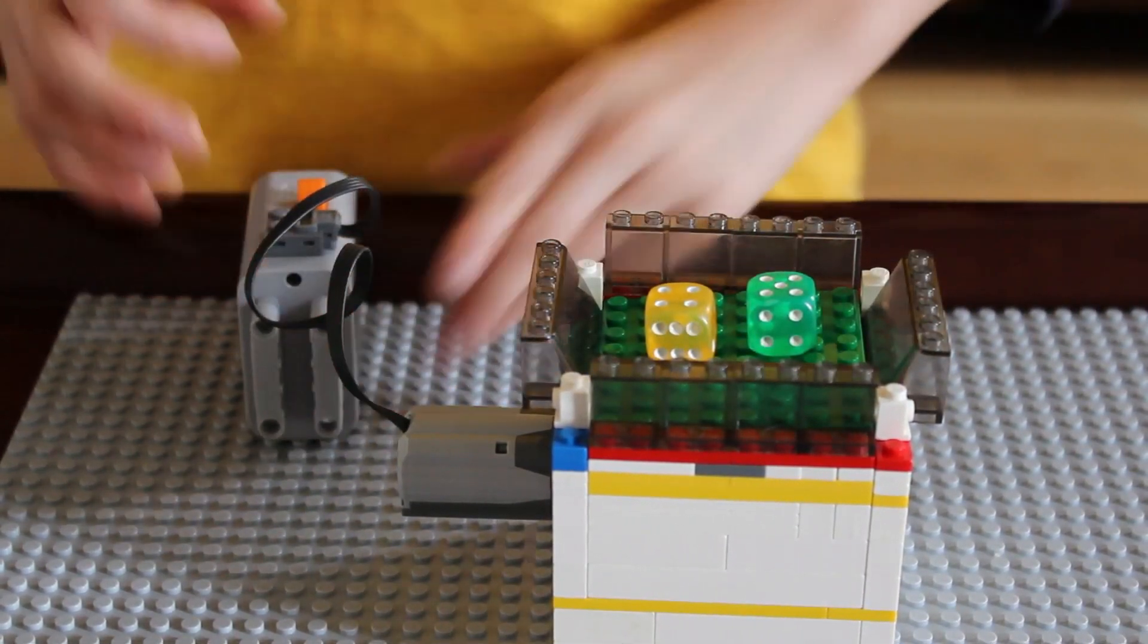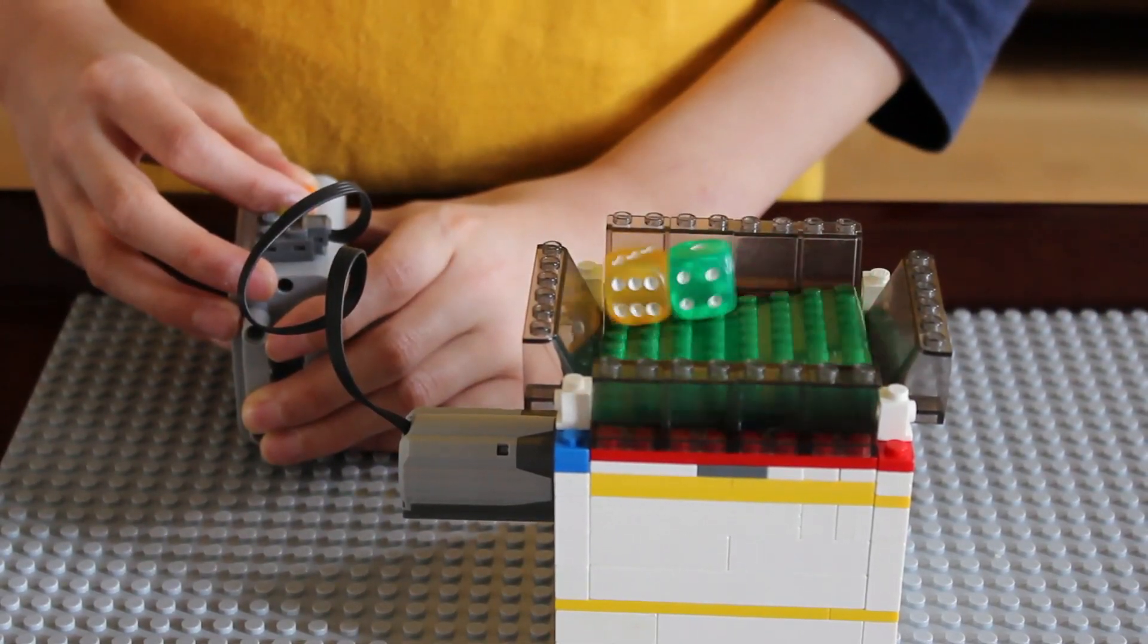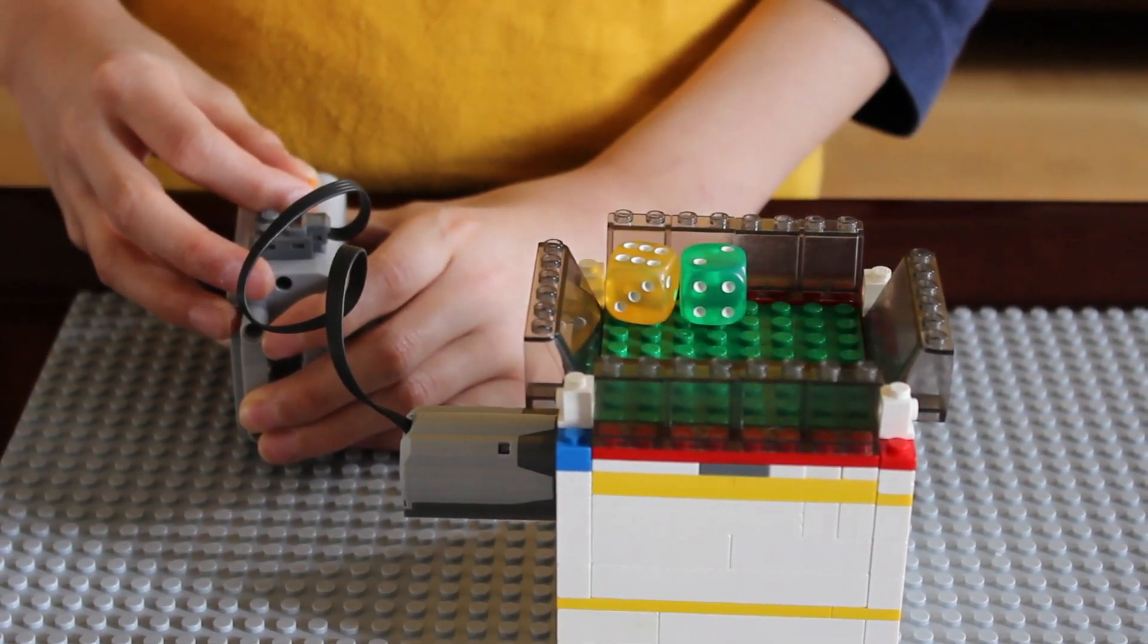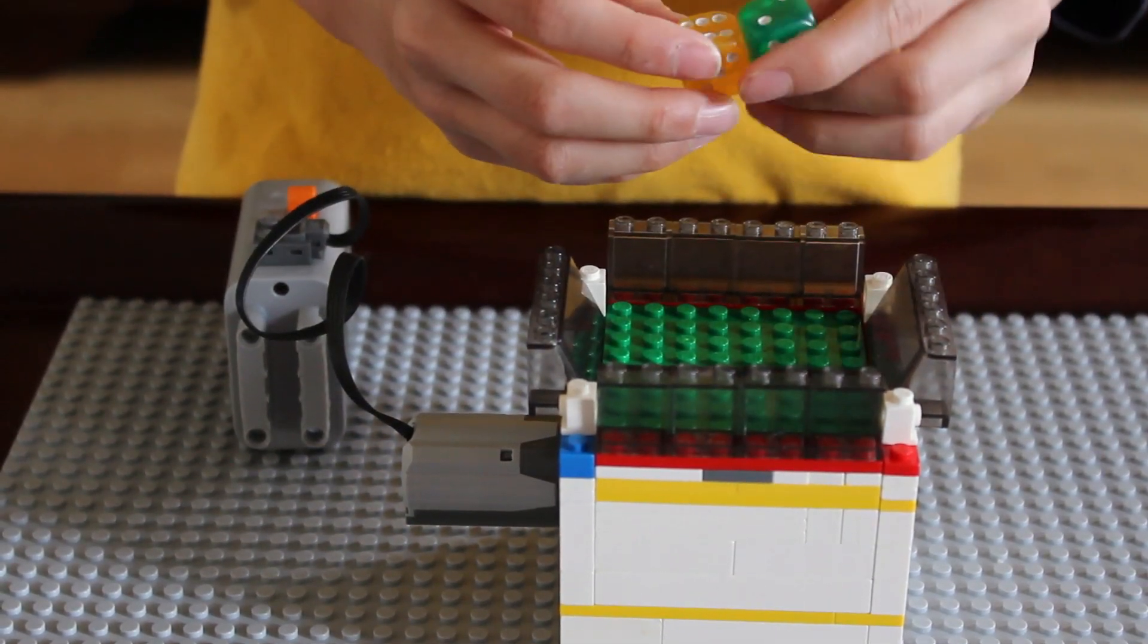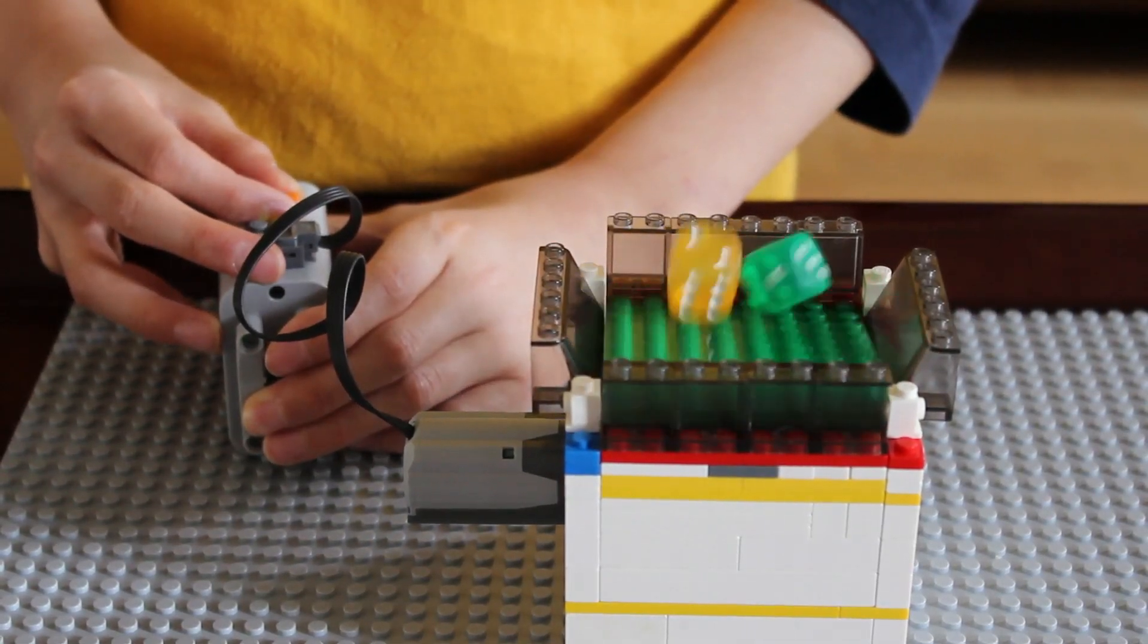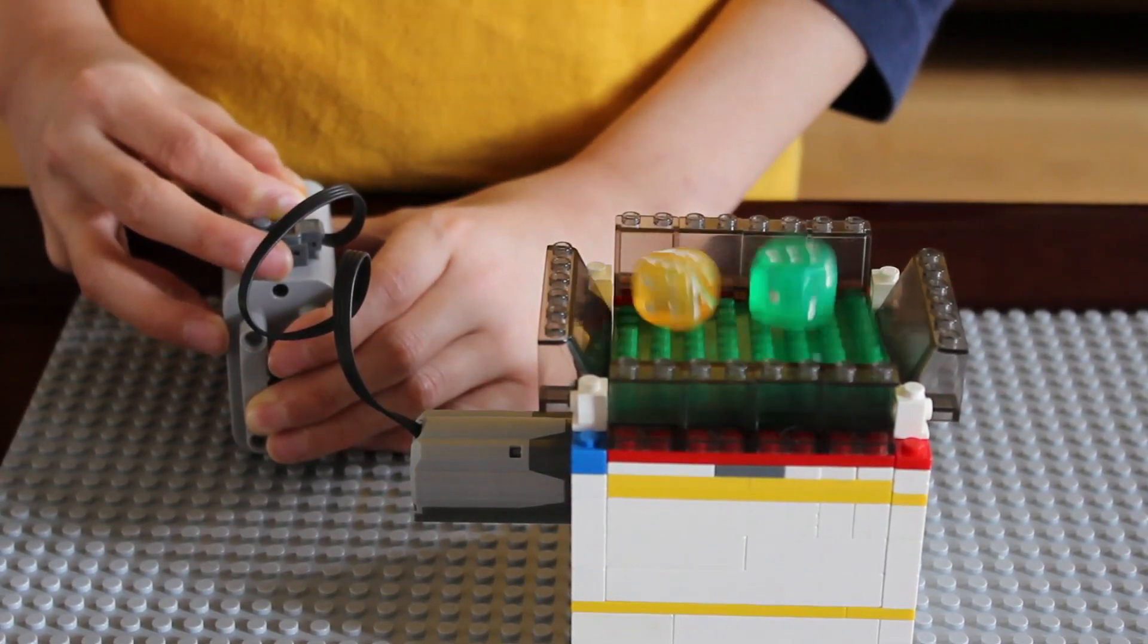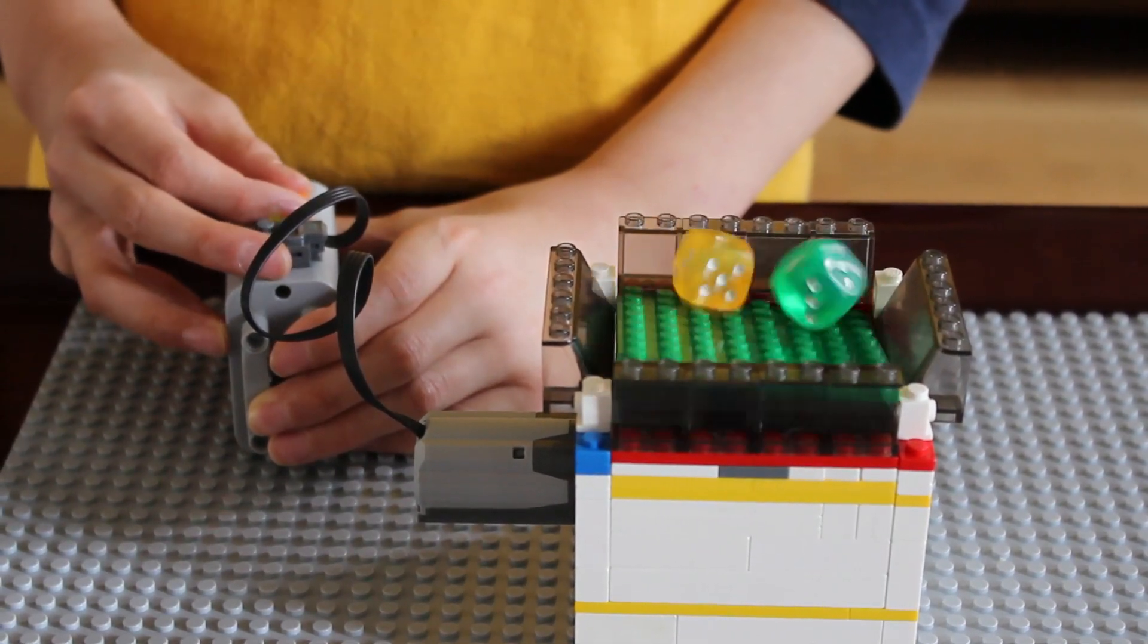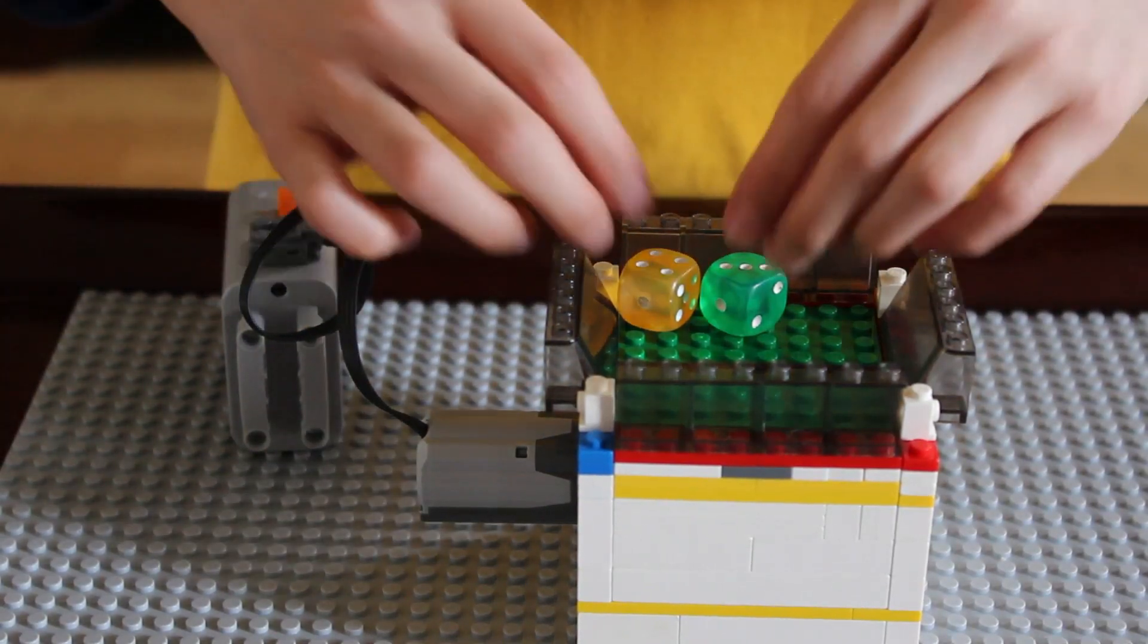And now we're doing high mode. High mode is going to make the dice go faster. It's that right there. Now it's an eight. Let's try one more time. Still an eight. Seven.